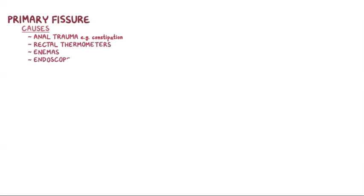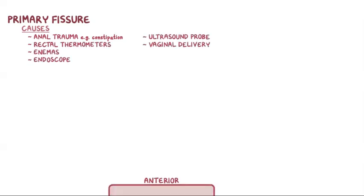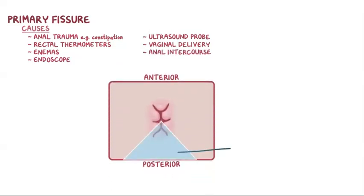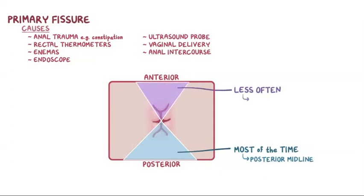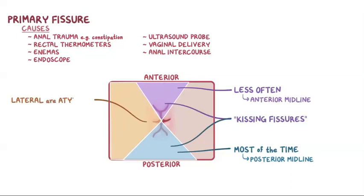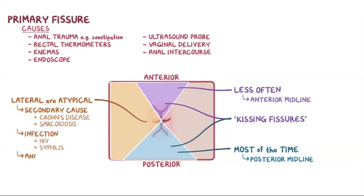A primary fissure is one that results from anal trauma, for example from constipation. Other causes include the use of rectal thermometers, enemas, an endoscope, an ultrasound probe, from a vaginal delivery, and anal intercourse. Most of the time, anal fissures are located in the posterior midline of the anal canal, and less often they can be in the anterior midline. Sometimes there are fissures in both the anterior and posterior midline, and these are called kissing fissures. Anal fissures in a lateral location are atypical and more commonly due to a secondary cause, like Crohn's disease, sarcoidosis, an infection such as HIV or syphilis, and anal cancer.